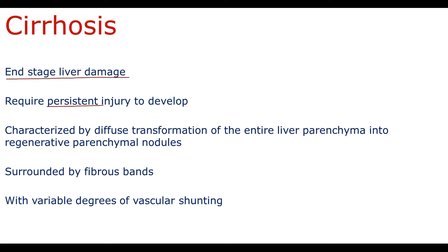Morphologically, cirrhosis is characterized by diffuse transformation of the entire liver parenchyma into regenerative parenchymal nodules that are surrounded by fibrous bands. Diffuse transformation means that fibrotic processes spread over the entire liver and are not localized at some distinct region. Regenerative parenchymal nodules consist of surviving hepatocytes that are regenerating by mitotic replication.